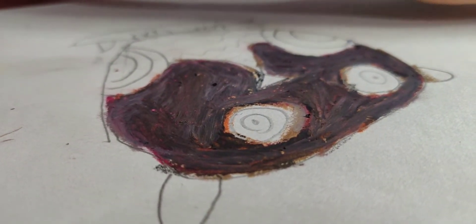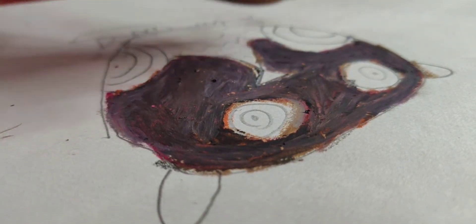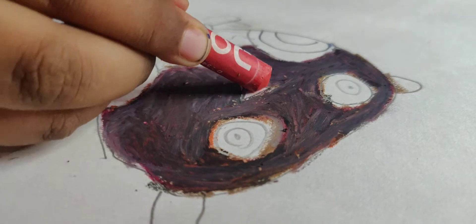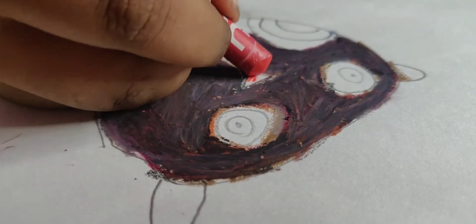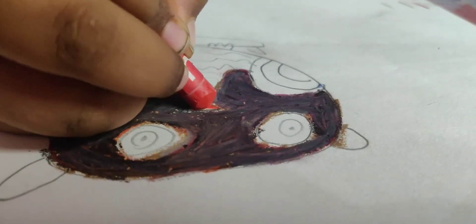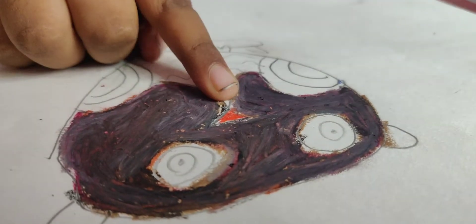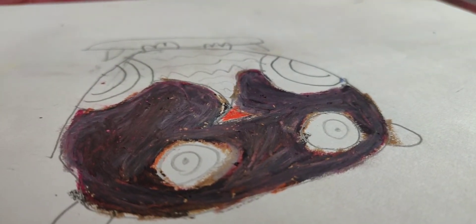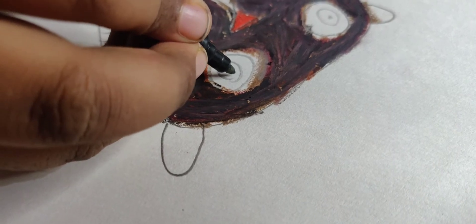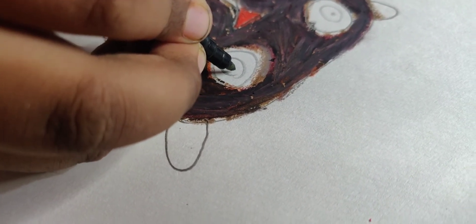We need to color the nose red. This red color. Then we need to color the outside eyes white, then inside you need to color black.